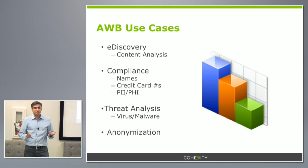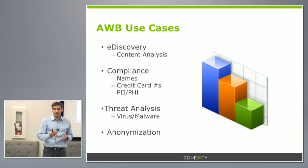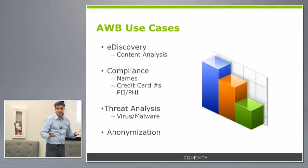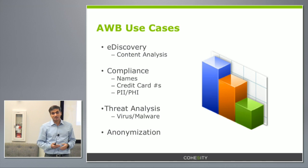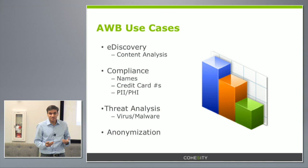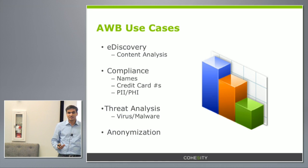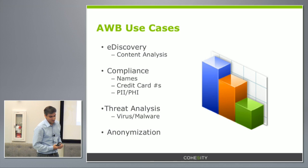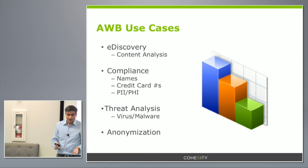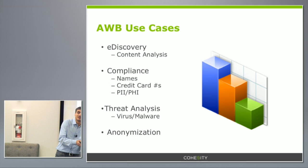Some of the use cases for AWB that we see in the field: the obvious one is e-discovery, where you do content analysis and find what you're looking for. We live in a world where enterprises are under cyber attack — everybody knows about the Sony leak. If you're concerned about personally identifiable information like credit card numbers, social security numbers, names, or passwords leaking, you can create an AWB app to scan the cluster for that type of information. You can also perform threat analysis — call a third-party library to detect a virus on a file, then look at snapshots of that file to figure out when the virus entered the system.